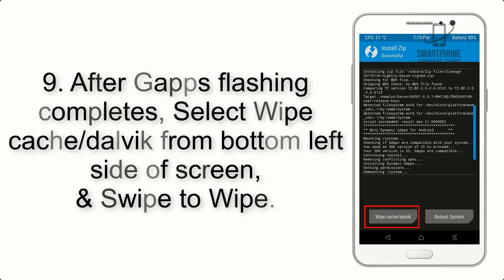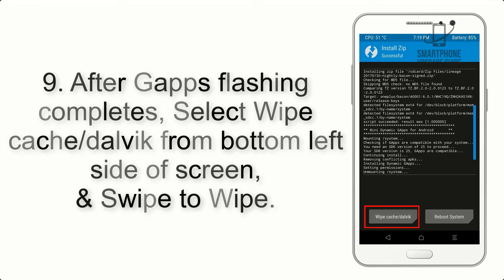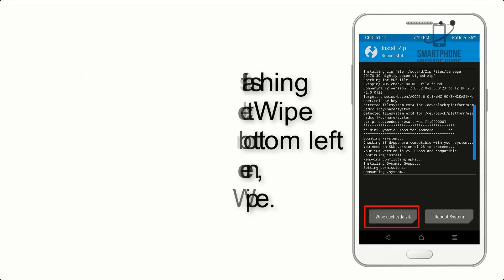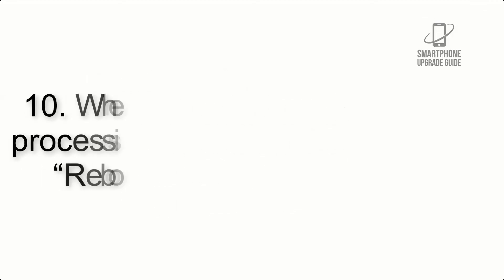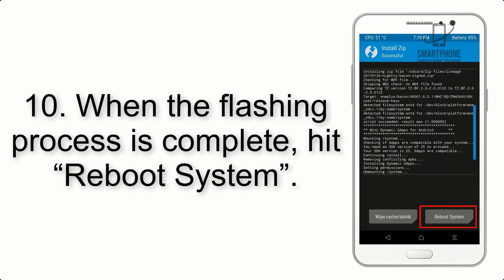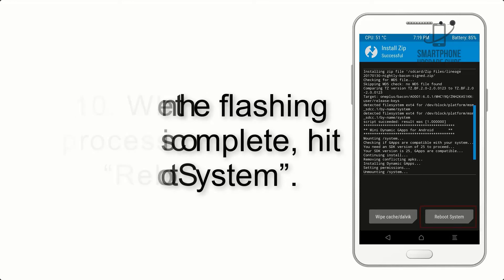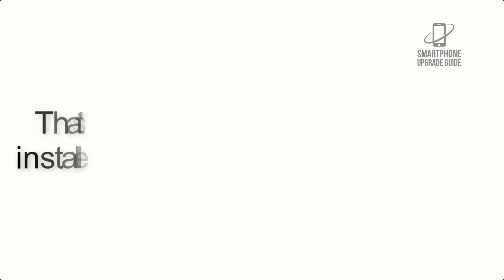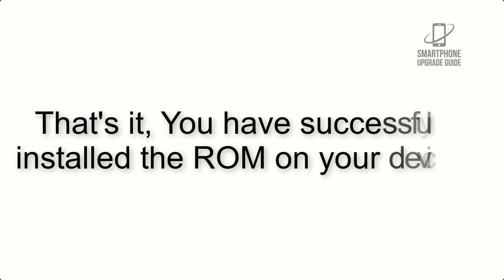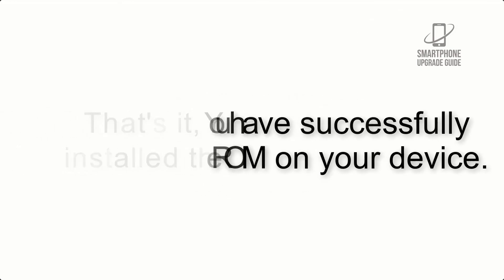Step 9: After GApps flashing completes, select Wipe Cache and Dalvik from the bottom left side of the screen and swipe to wipe. Step 10: When the flashing process is complete, hit Reboot System. That's it — you have successfully installed the ROM on your device.